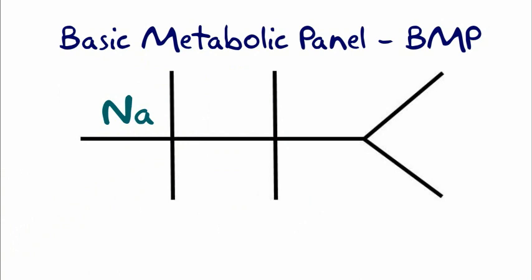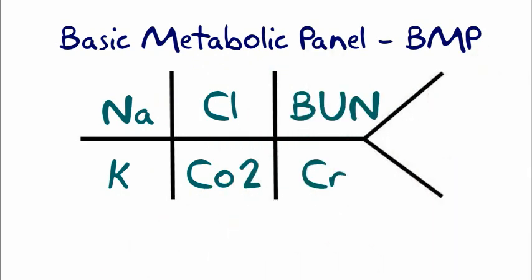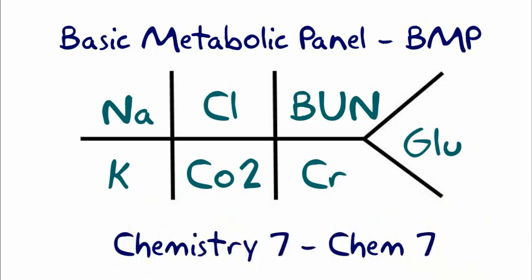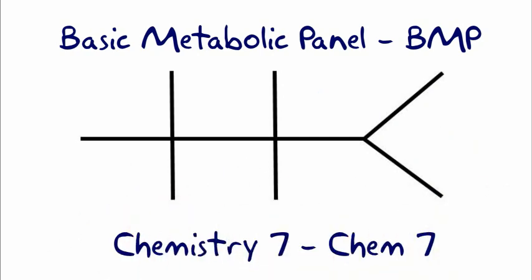And it includes lab values like sodium, potassium, chloride, CO2, bicarb, BUN, creatinine, and glucose. This is the BMP, or Chemistry 7, called that for the 7 items in the panel.